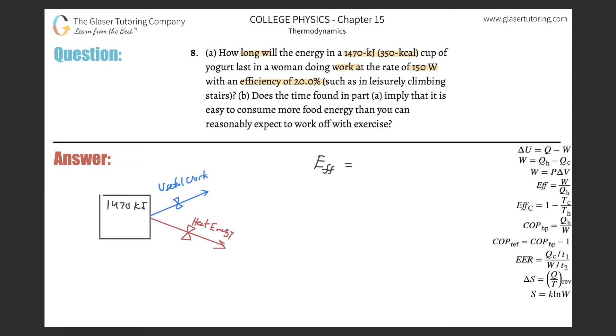The efficiency is the power output, the useful power output, divided by the total power being performed. The 150 watts is the rate at which the woman is doing work. That's only part of the output, not the total. But we have a relationship between useful work and total work. The total power equals the power output divided by the efficiency.